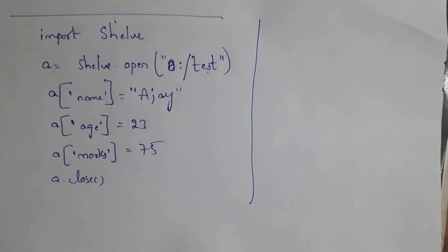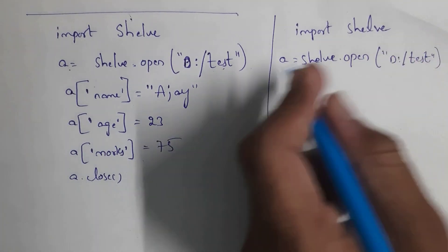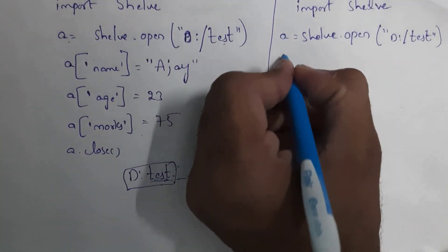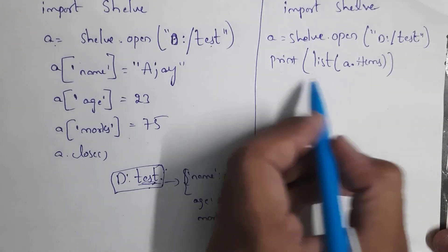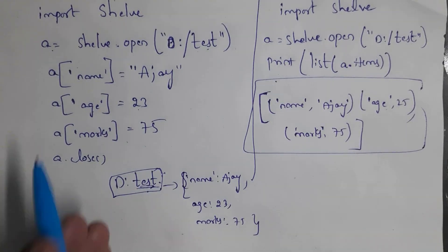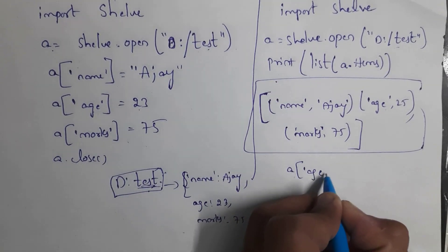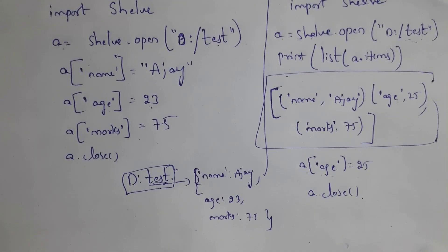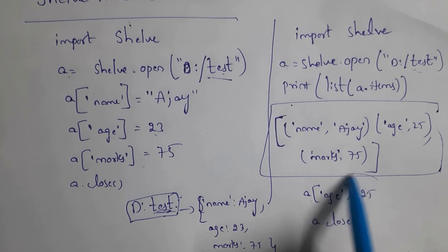To see the data, write 'import shelve', open the database: a = shelve.open('D:/test'), then print(list(a.items())) to print output in the form of a list. You will see name Ajay, age 23, marks 75. To modify data — for example changing age 23 to 25 — write a['age'] = 25, then a.close(). This demonstrates creating a database, adding dictionaries, reading data, and modifying data using the shelve module.